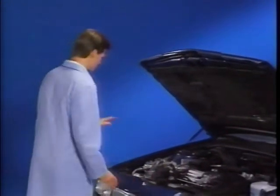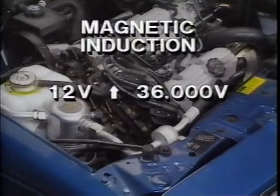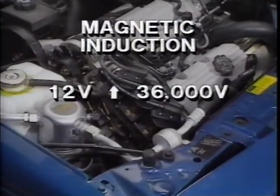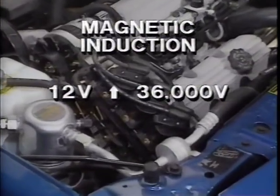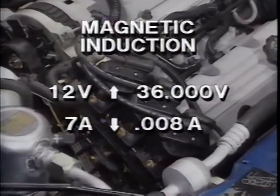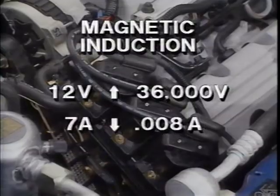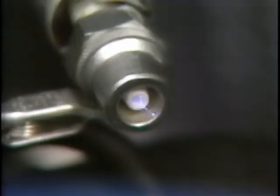The ignition coils provide a dramatic example of how voltage and amperage relate. Through a process called magnetic induction, a 12-volt circuit is stepped up to 36,000 volts. But the current drops from seven amperes to mere thousandths of one ampere. The high voltage is required to overcome the high resistance of the spark plug's air gap. Once resistance is overcome, the spark plug fires.